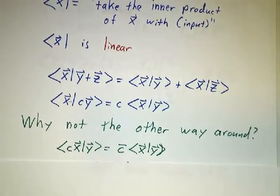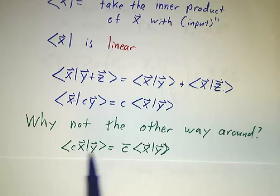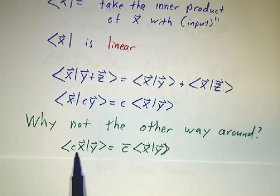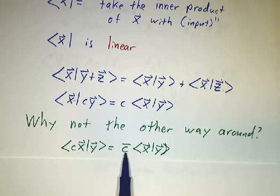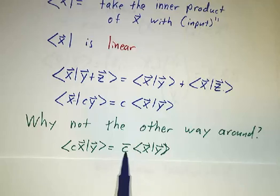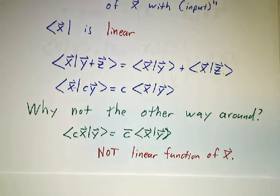Now why did we make x the bra and y the ket, besides the fact that the word 'bracket' is written in that order? Well, the inner product is not linear in x. If we held y fixed and thought of the inner product as a function of x, it wouldn't be a linear transformation — we'd get C bar instead of C. Once we have complex numbers, things that multiply by x get conjugated. So it's not a linear function of x, meaning x is the linear transformation and y is the thing being acted on.